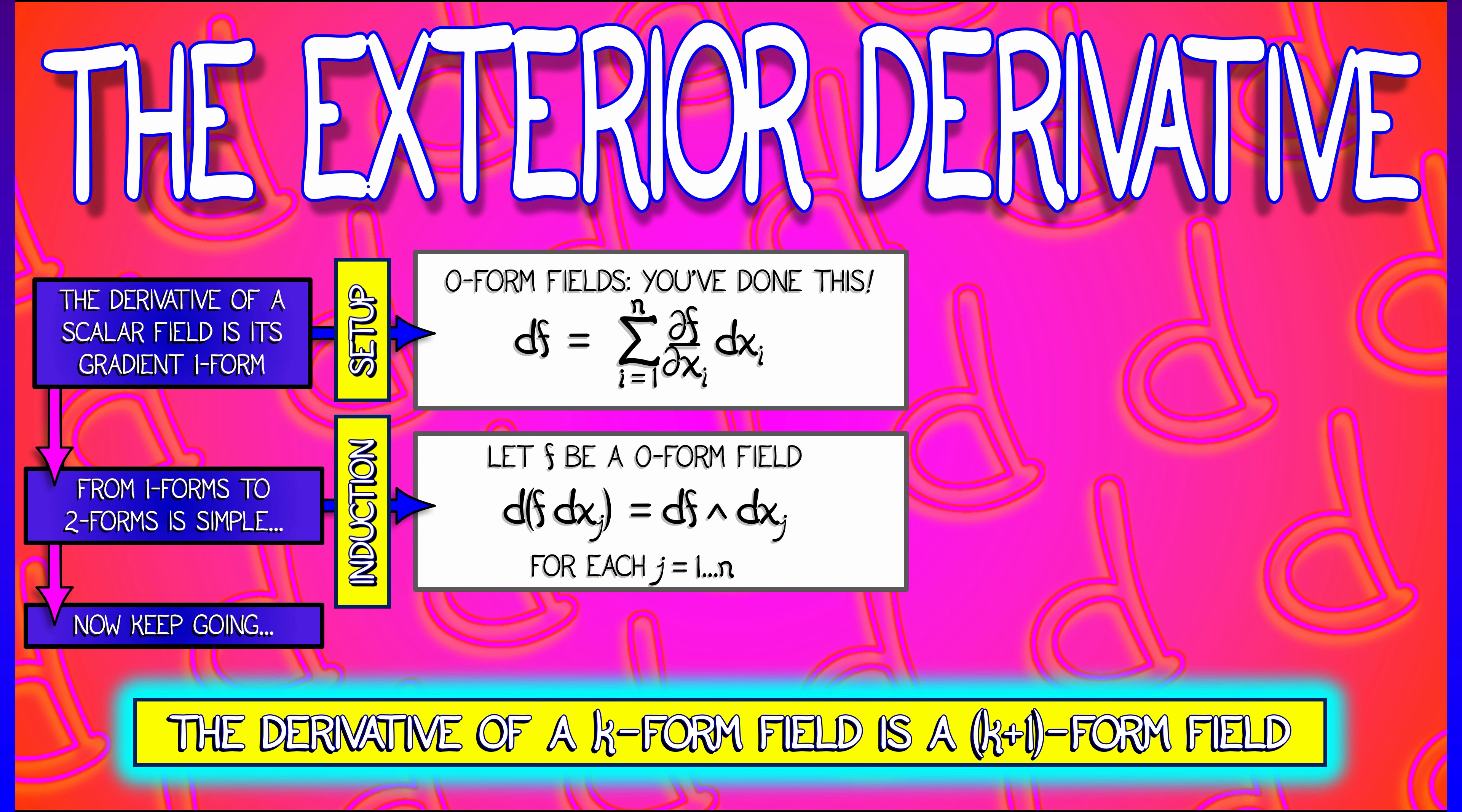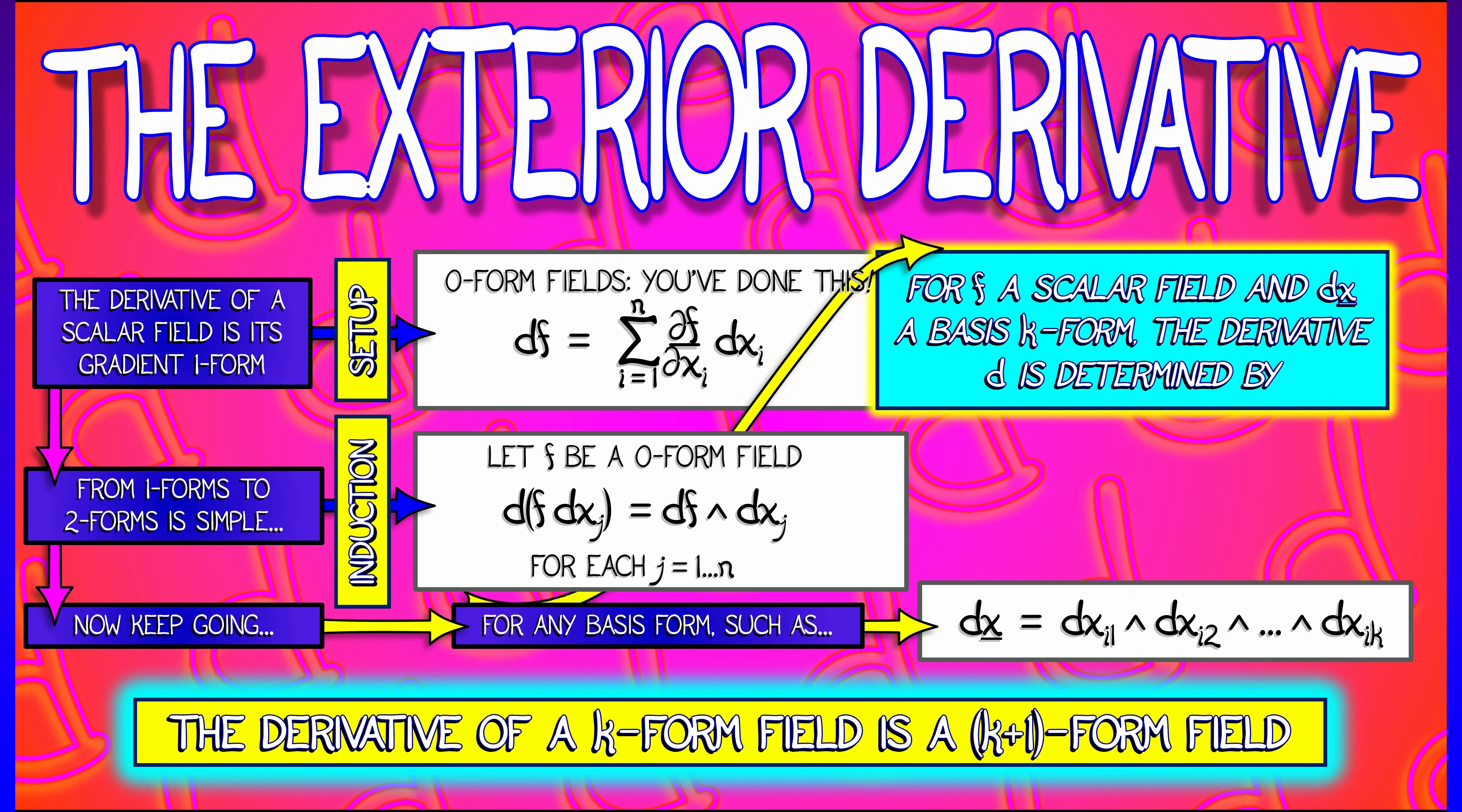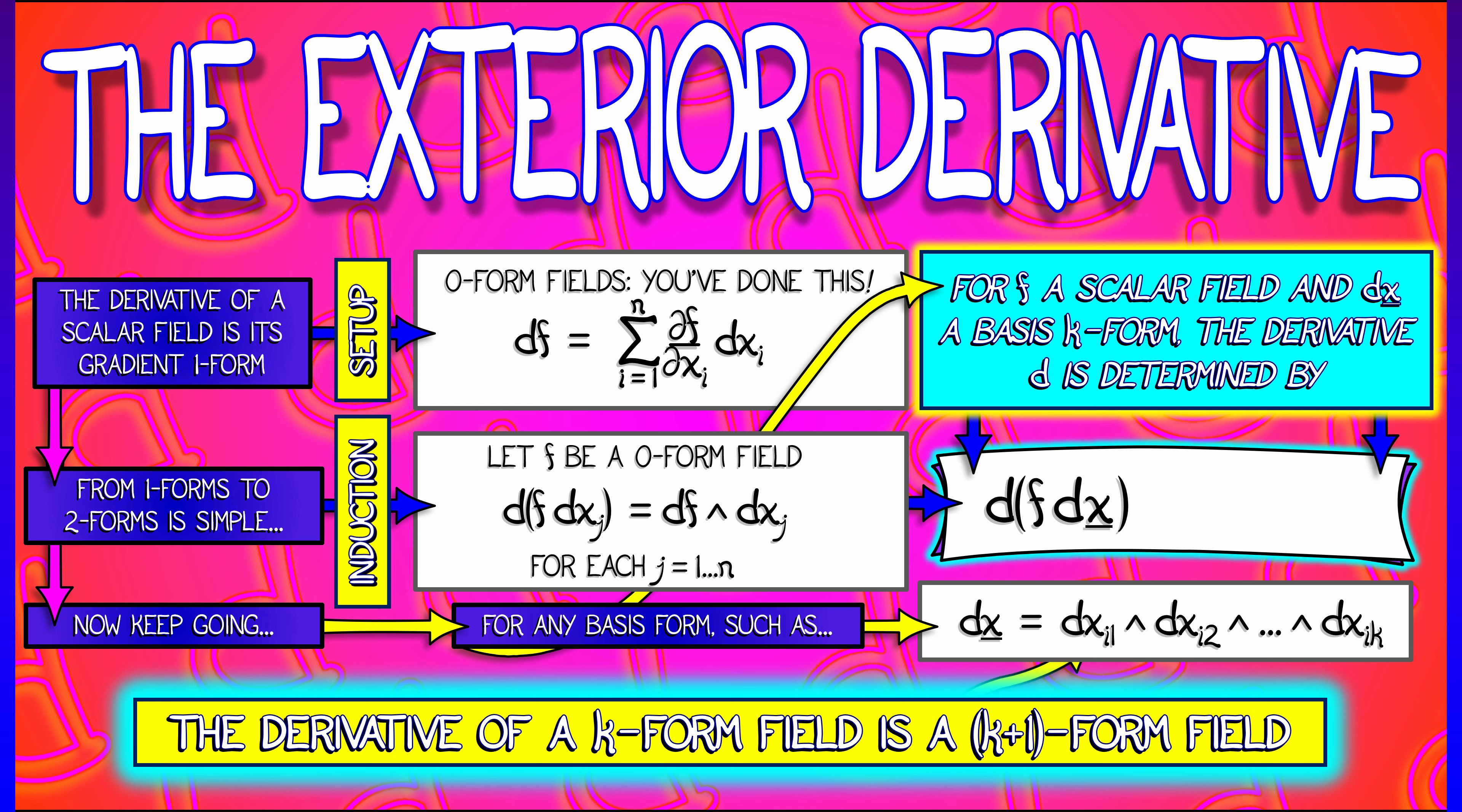The derivative of a k-form field is going to be a k plus 1-form field. So if I take any basis k-form, something like dxi1 wedge dxi2 all the way up through dxik, for simplicity, look, let's just call that dx with an underline. Then, for f a scalar field and dx this basis k-form, the derivative of f dx is given by df wedge dx.